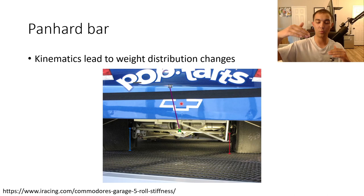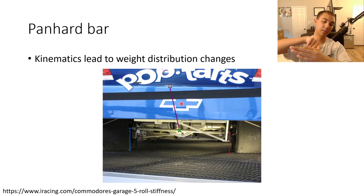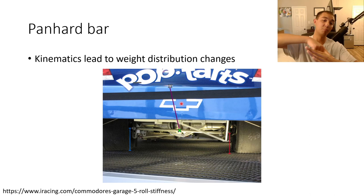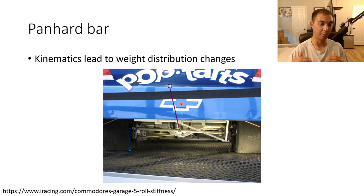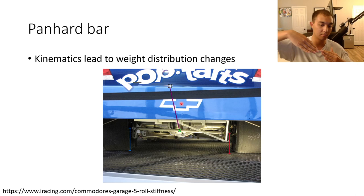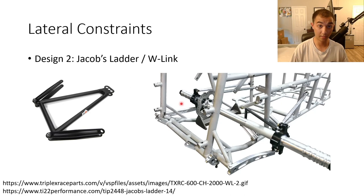When you make track bar changes in NASCAR, you're actually making a roll center height change. There are also kinematic lateral changes — as the axle moves up through bump, that pickup point moves to the left, bringing the right rear tire in toward the center of mass and loading it, which decreases cross-weight percentage. The reverse happens in rebound. This all assumes a positive track bar split — right side higher than left — which is typical on micros.